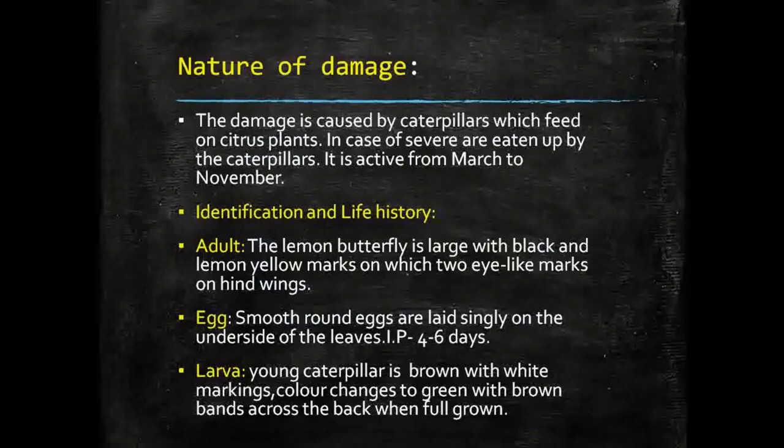The damage is caused by the caterpillar, which feeds on citrus plants. In case of severe damage, all leaves are eaten up by caterpillars. The pest is active from March to November.